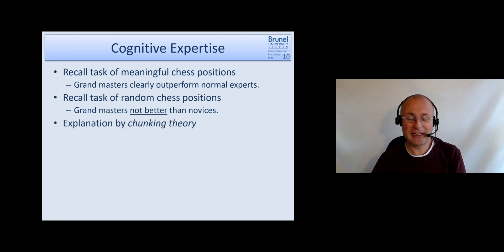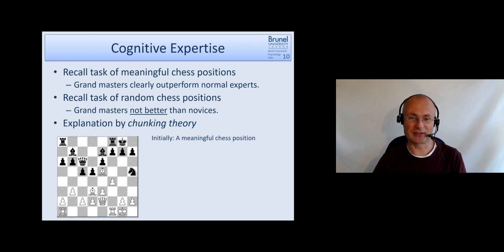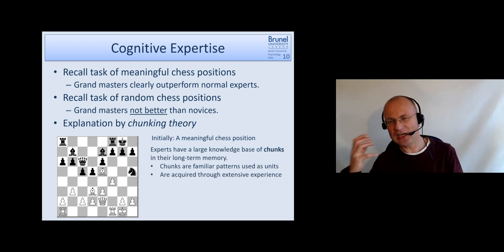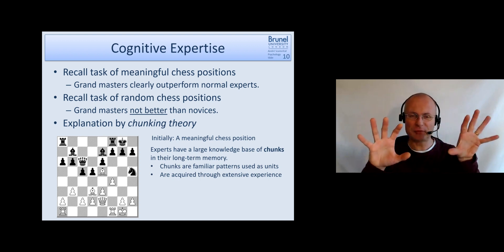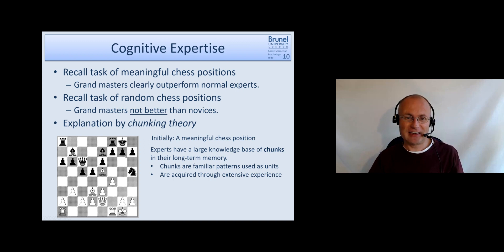The explanation is by chunking theory. If you remember back to the short-term memory lecture with Miller's 7 plus minus 2 theory, we can remember that many chunks. Suppose you have this chess board with the figures arranged on them in a meaningful chess position. Because experts have such a large knowledge base of chunks and arrangements, they are much more likely than normal experts or novices to detect certain patterns and just store them as a chunk. That they have so many chunks is just experience. They had so much practice, they played so many games.